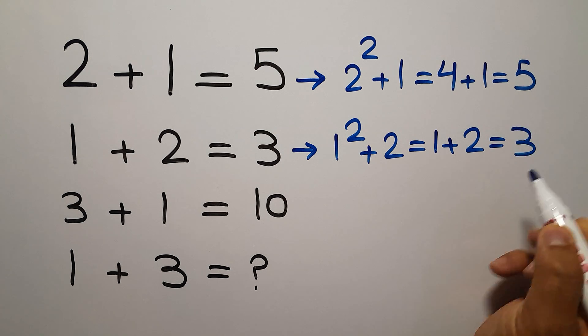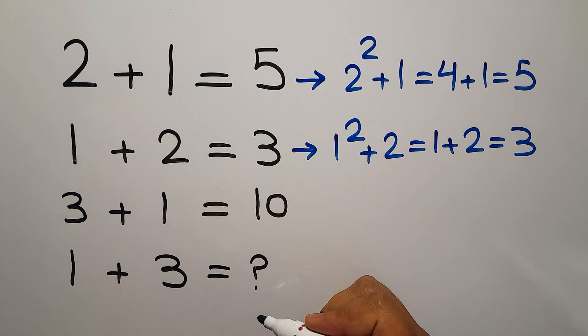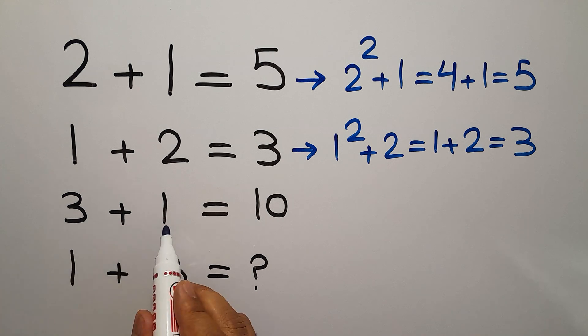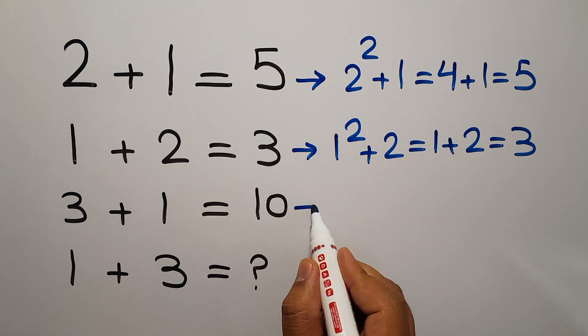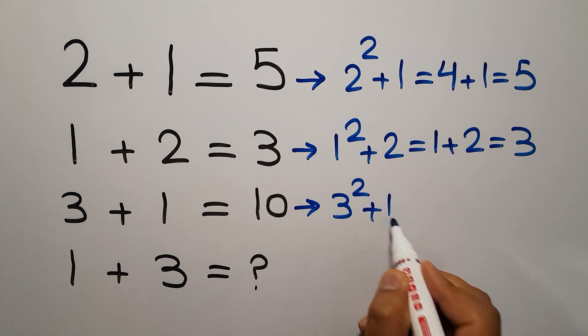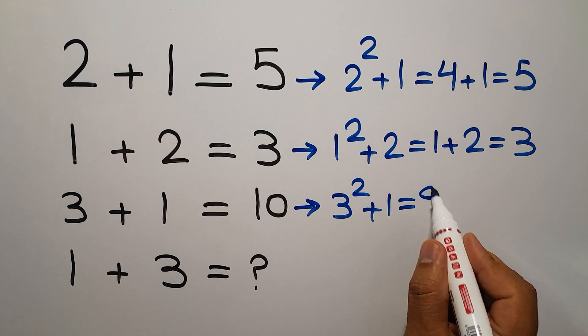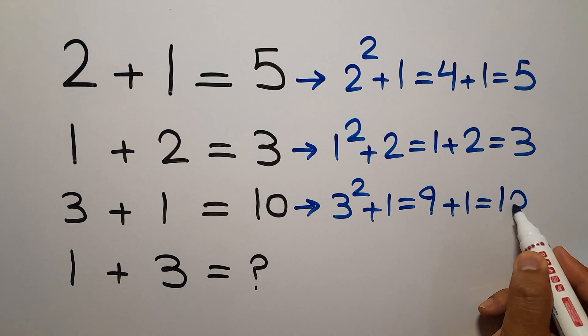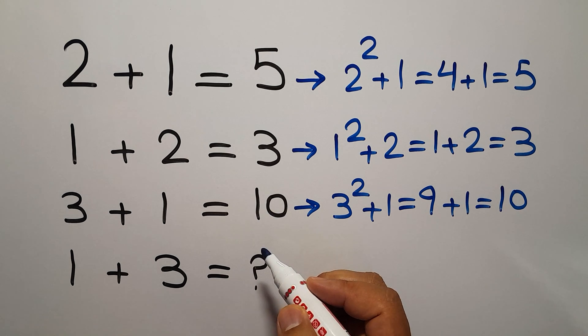In the third line we have 3, 1, and 10. 3 square plus 1 gives us 9 plus 1, and this is equal to 10, the right hand side number.